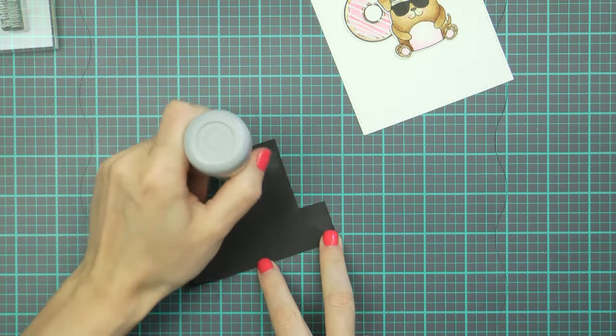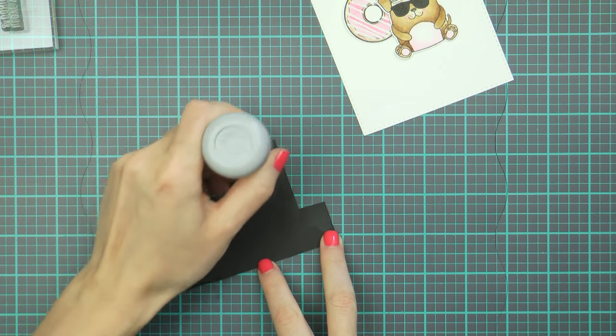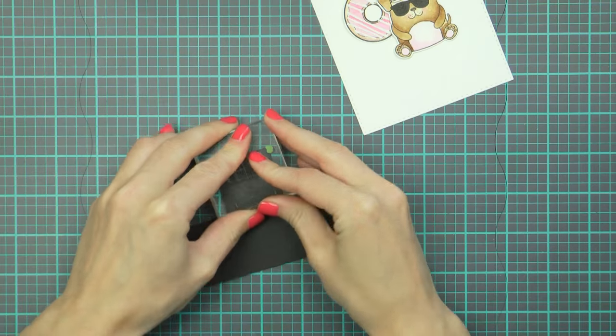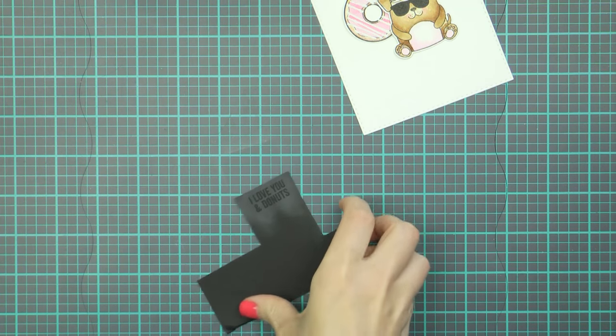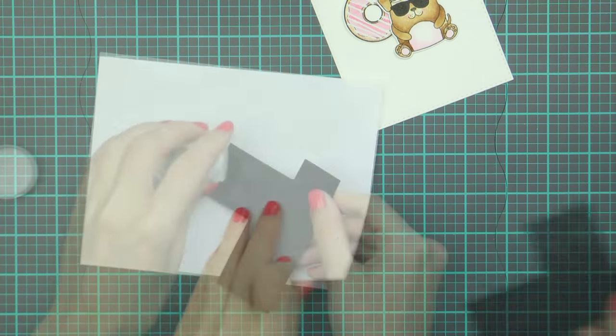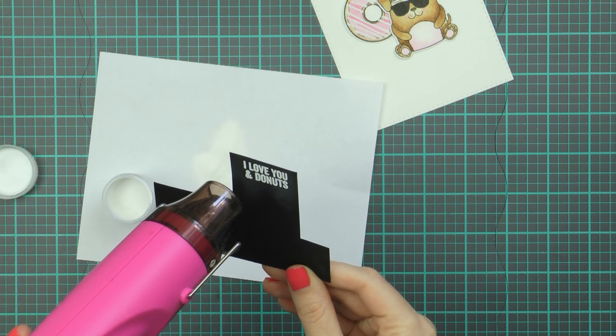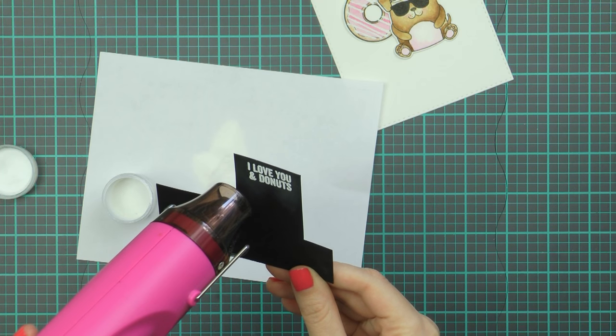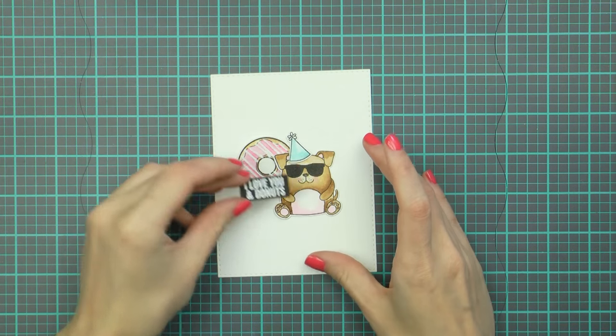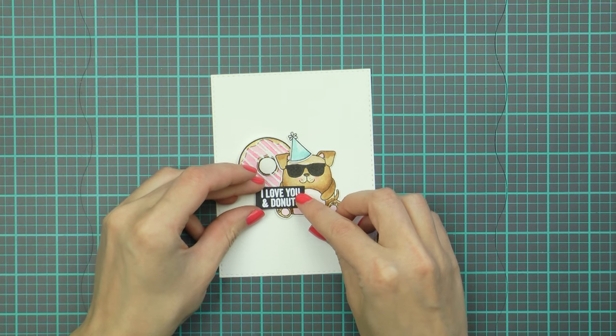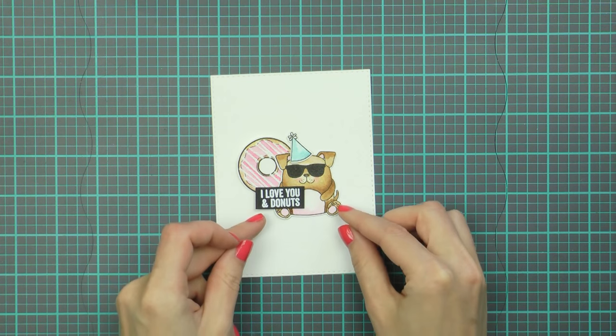So next I arranged the images on my panel the way I envisioned them and I heat embossed the sentiment for this card. I went with I love you and donuts. I think it's a fun one, you know it's a perfect one for a funny card. So I heat embossed it in white embossing powder and I used WOW Opaque Bright White and embossed it onto black cardstock. I trimmed it with my scissors and then started adhering these images one by one onto the panel forming my card.